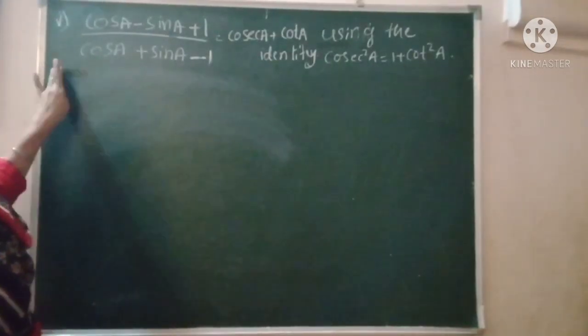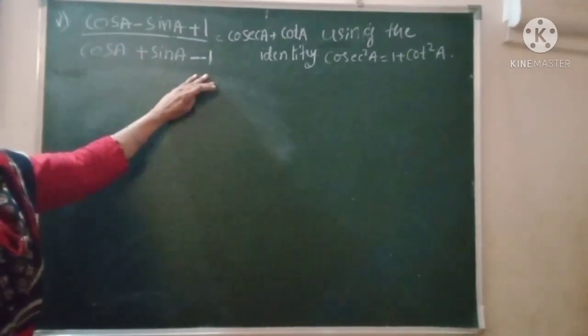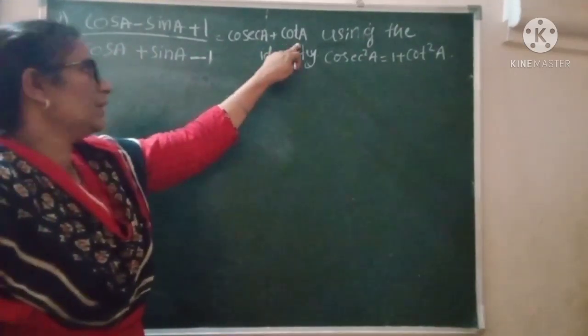Okay, the next question is: (cos A - sin A + 1) divided by (cos A + sin A - 1). This is equal to cos C plus cot N.